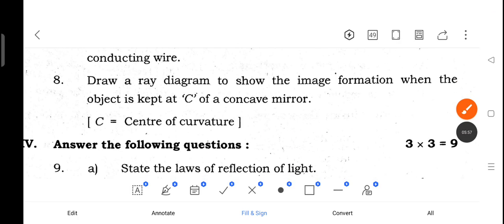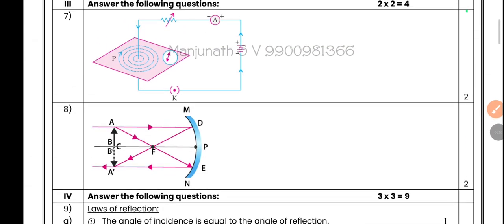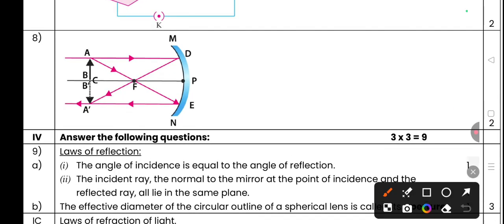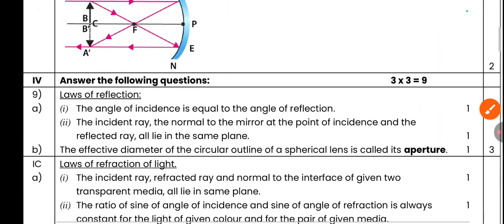Question 8: Draw a ray diagram to show image formation when object is kept at C of a concave mirror. When we place object at C, image is also formed at C. This is concave mirror with principal axis. If we pass one line from object parallel to principal axis, it passes through principal focus. Another line passes from principal focus and comes out parallel to principal axis. Wherever both lines intersect, image is formed. Object is AB, image is A'B'. Real inverted image, same size of object, placed at C.